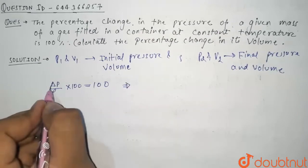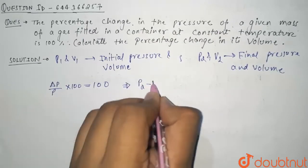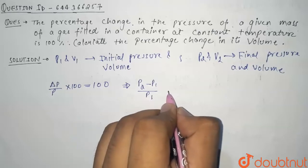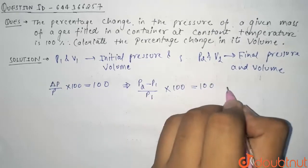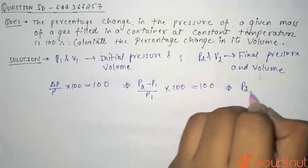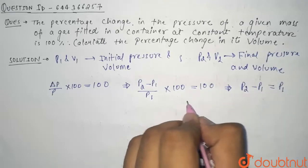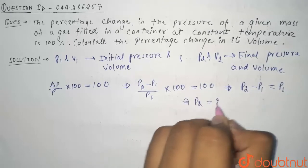So from here, what is delta P? Delta P is final pressure minus initial pressure divided by initial pressure, that is P1, into 100 equals 100. So after this comes out to be P2 minus P1 equals P1. So from here, our P2 comes out to be 2P1.